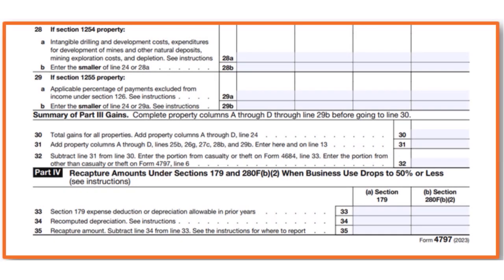Next is Part 4. Part 4 first gives the summary of Part 3 gains, and then you move on to Part 4 itself, which has to do with recapture amounts under Section 179. This doesn't apply to our case here, but if you have any questions please let us know in the comment section.